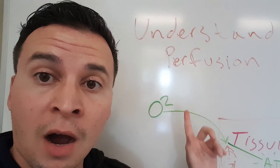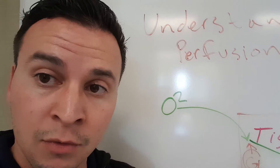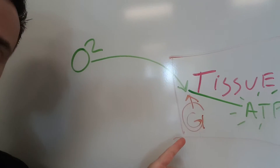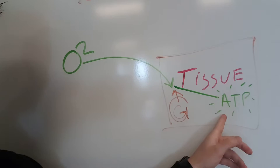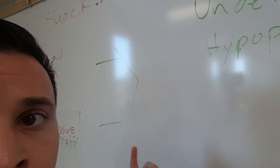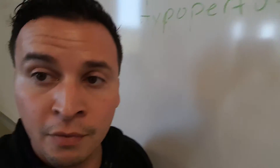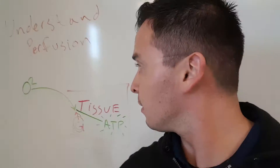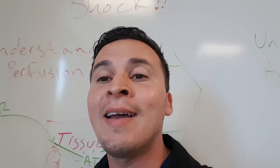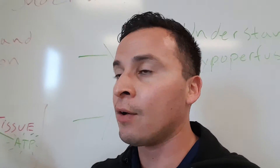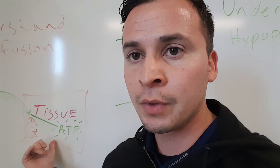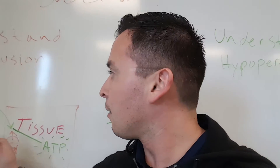So to review: perfusion is oxygen getting to where it needs to go in a timely fashion, meeting glucose to make adenosine triphosphate, which is life. Hypoperfusion means this is either not happening or not happening fast enough. If oxygen doesn't get to where it needs to go, you can't make ATP — you can't make energy.